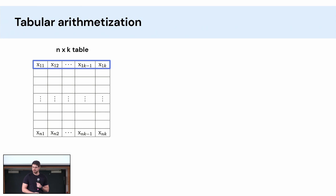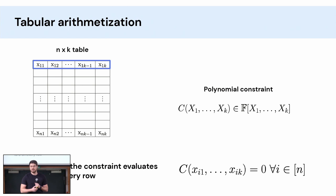Okay, so first before AIR I'm gonna start with a simpler arithmetization. It's quite useless but it's a good warm-up. We have an n by k table of field elements. We have a polynomial constraint over k variables whose degree is quite small, much smaller than n, and then we ask that the constraint evaluates to zero on every row of the table.